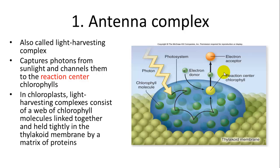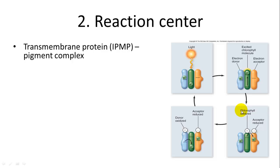In the chloroplast, the light-harvesting complex consists of a web of chlorophyll molecules linked together and held tightly in the thylakoid membranes. A matrix of proteins holds the reaction center within the thylakoid membrane.